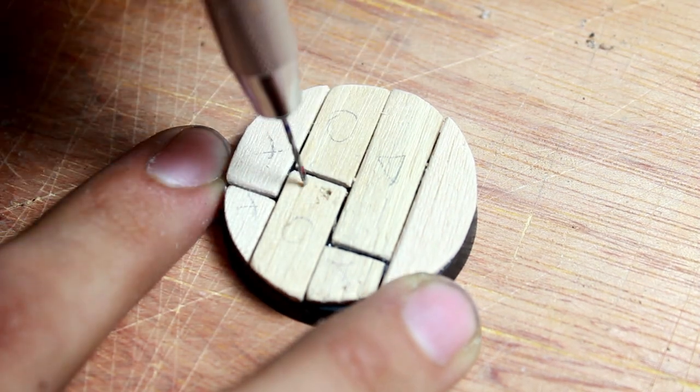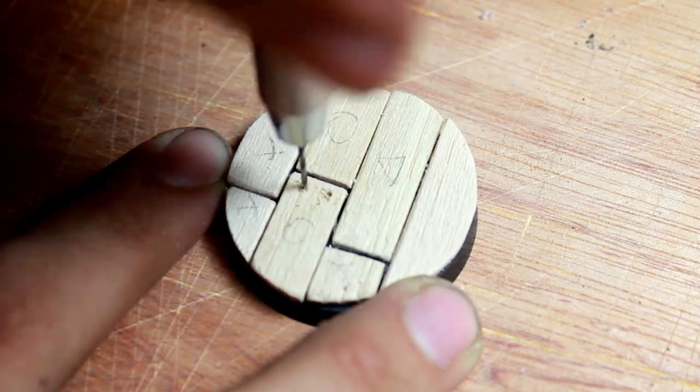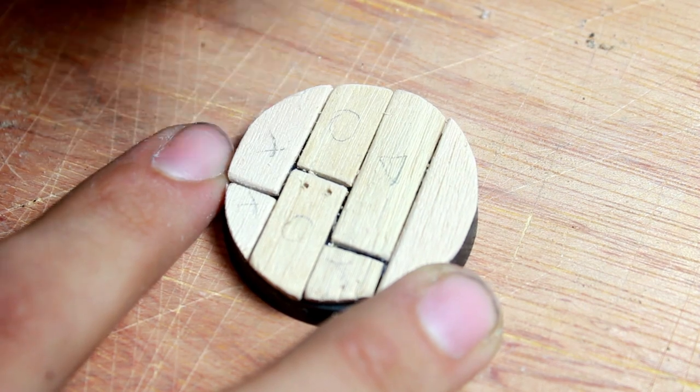And then I created some nail holes by using a pin vise and a small drill bit and poking two holes at the end of each plank.